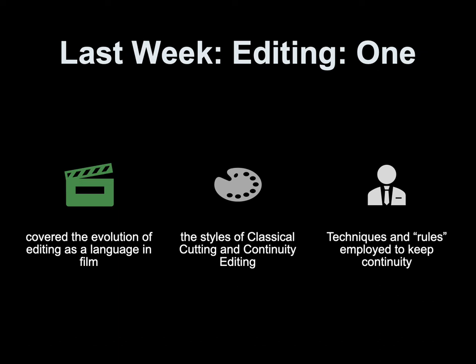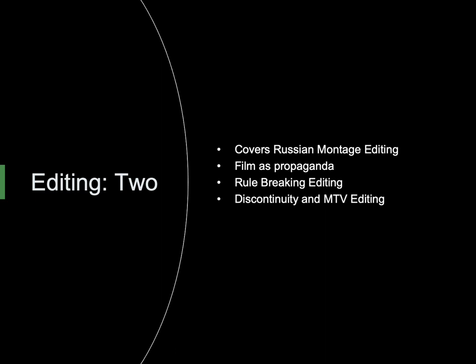Last week in Editing 1, we covered the evolution of editing as a language in film, the styles of classical cutting and continuity editing, and techniques and rules employed to keep continuity. Editing 2 covers Russian montage editing, film as propaganda, rule-breaking editing, and discontinuity and MTV editing.